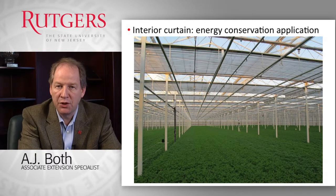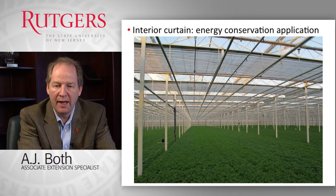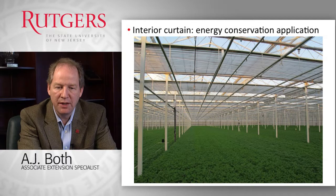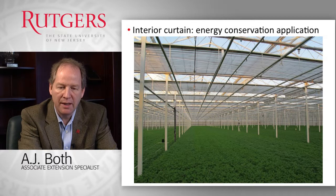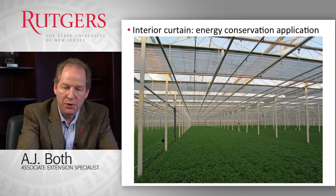These curtains can also be used for energy conservation and retention. Here you see a curtain being closed at the end of the day as the sun is setting. This is done to reduce as much as possible heat radiation from the warmer greenhouse environment to the outside colder sky temperature. So the curtain material serves a dual purpose — shading and energy conservation.